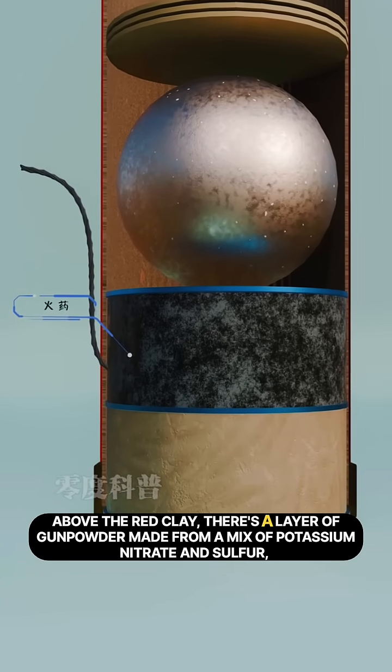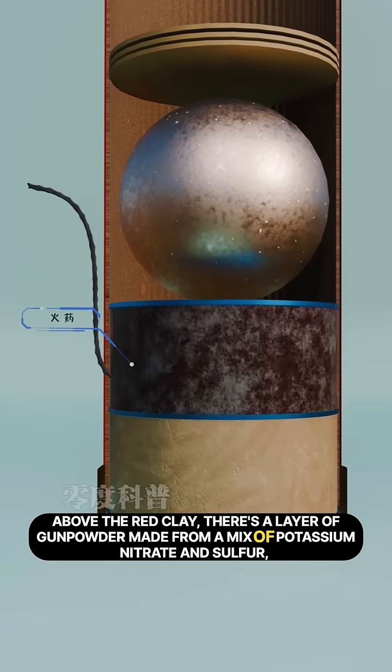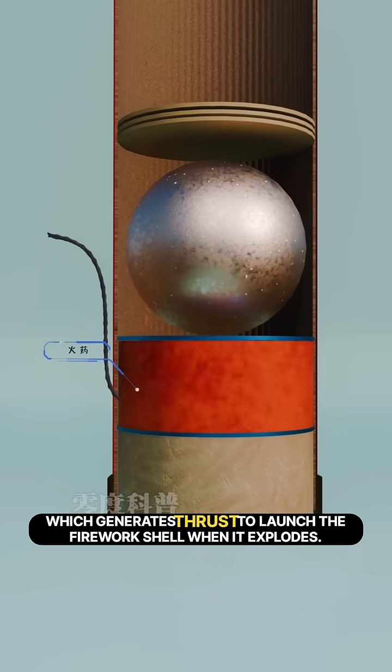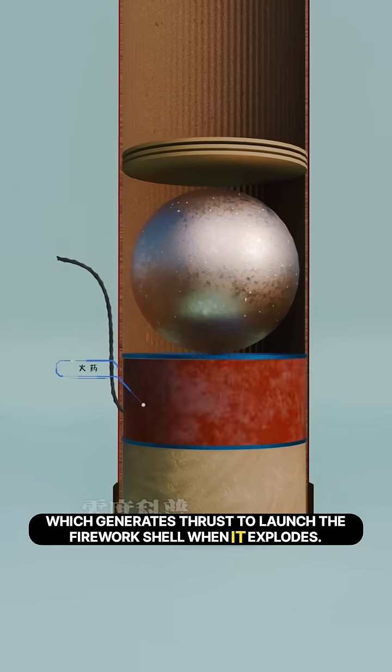Above the red clay, there's a layer of gunpowder made from a mix of potassium nitrate and sulfur, which generates thrust to launch the firework shell when it explodes.